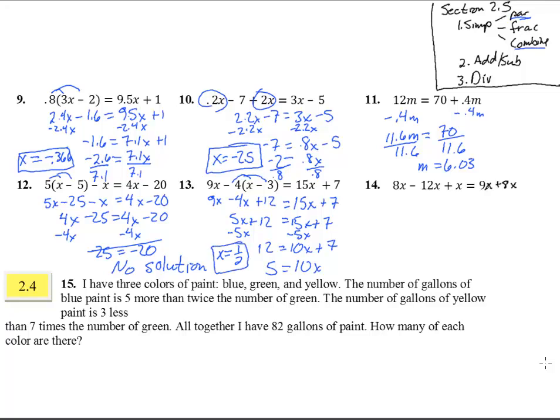And number 14. 8x minus 12x plus x. That's going to be a negative 3x. Equals 9x plus 8x. That's 17x. Combine these x's together. So add 3x to both sides. So we get 0 equals 20x. We have nothing to add or subtract. So now we divide. Divide by 20. And we get x equals 0. Notice how number 14 is different from number 12. Here the x's went completely away. Here we still had an x and that x equals one particular number. It's very different than the no solution and all real number problems we've had.